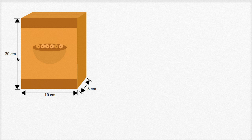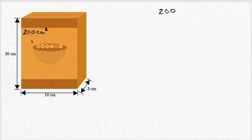The front of the box is 20 centimeters tall and 10 centimeters wide. It's a rectangle, so to figure out its area we can just multiply 20 centimeters times 10 centimeters, and that gives us 200 square centimeters — that's the area of the front. We also know there's another side with the exact same area as the front, and that's the back of the box. So that's another 200 square centimeters for the back.